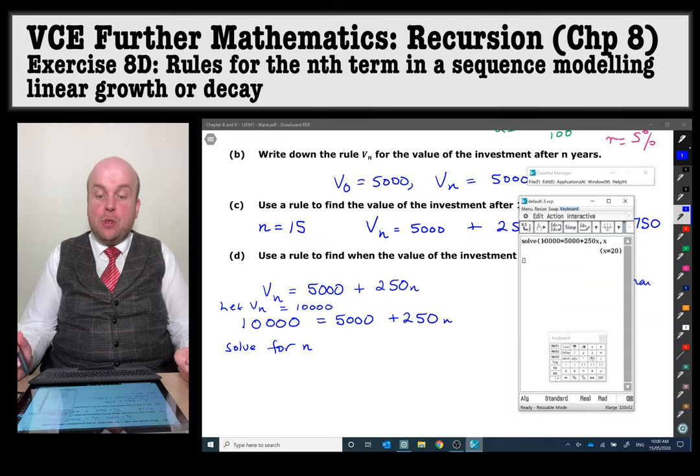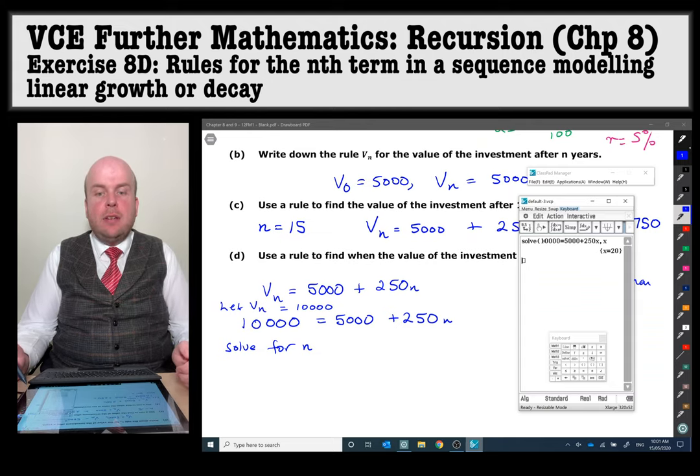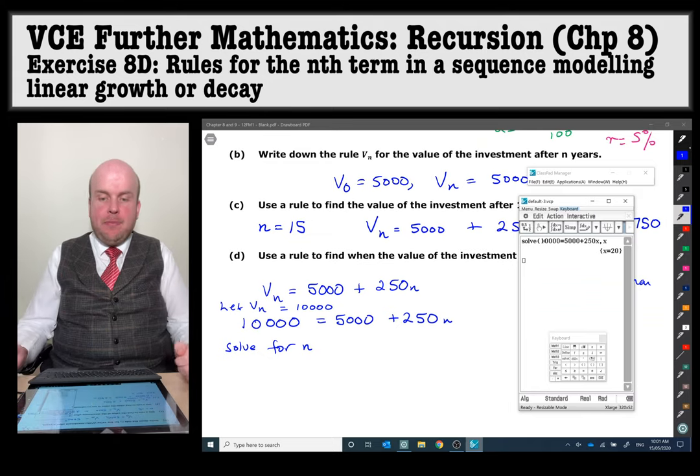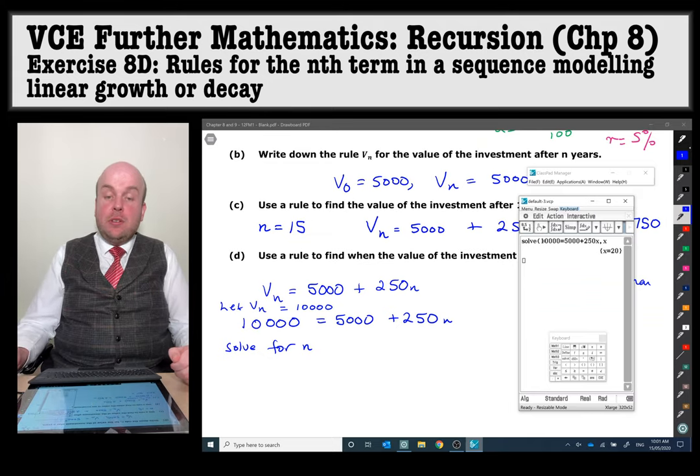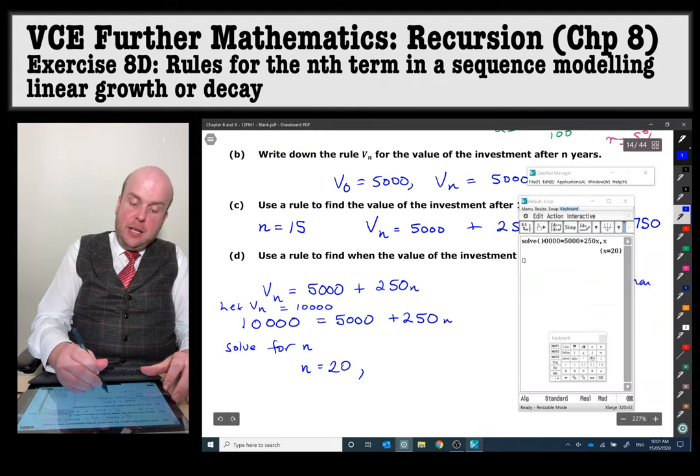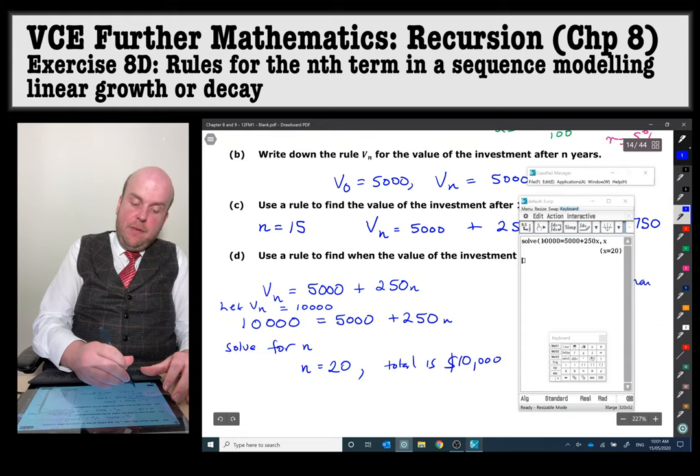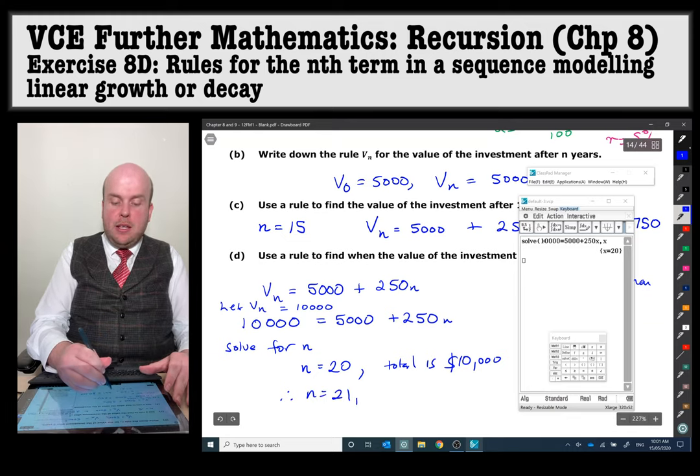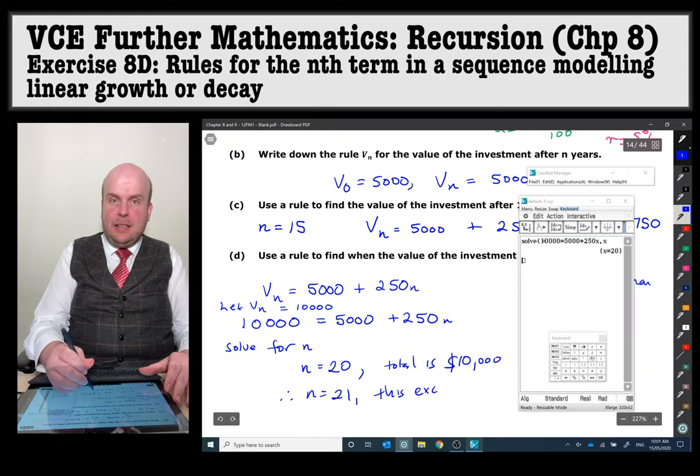So therefore, that's when it's exactly 10,000. But notice there, the question says where it first exceeds, in other words it's first greater than 10,000. So that means when n equals 20, the total is 10,000. So therefore, and that's what those three dots means, therefore when n equals 21, this exceeds $10,000.